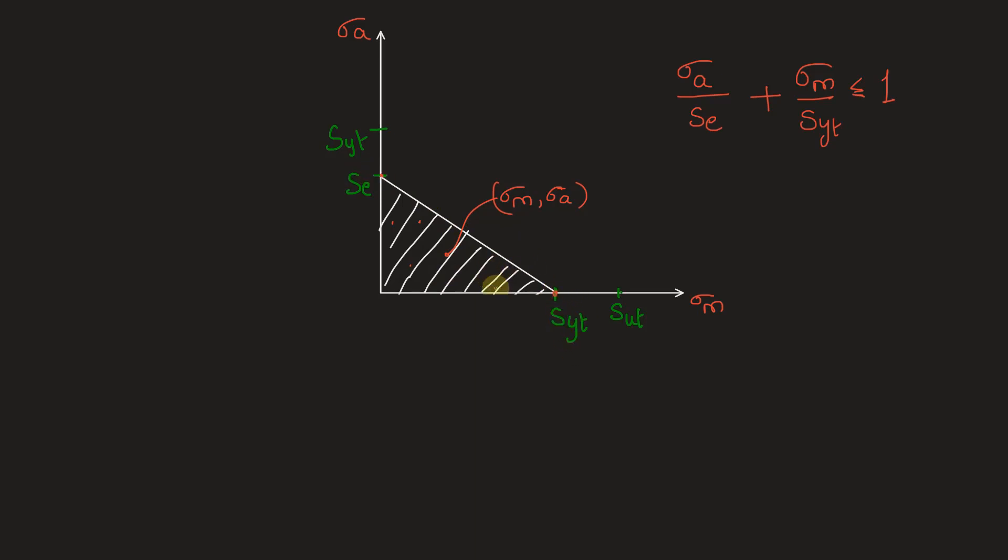But any point outside this envelope will cause a failure. That means design should be done within this envelope. So we are taking lower strength value as compared to the other envelopes. How are the other envelopes given?